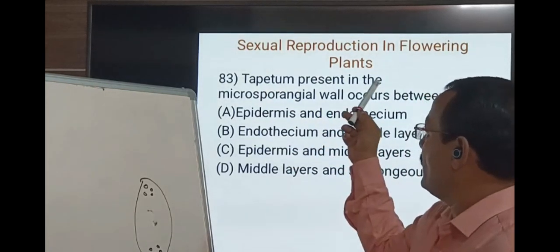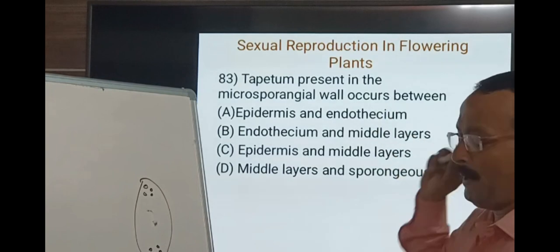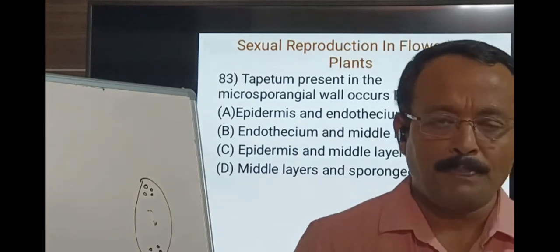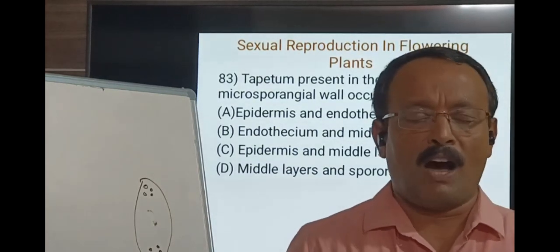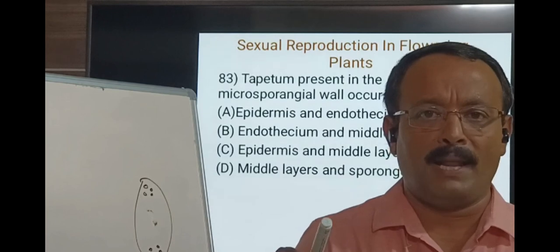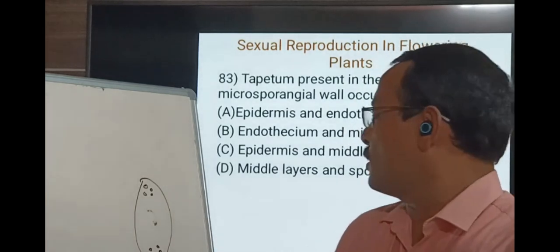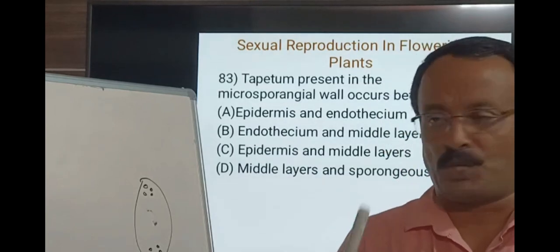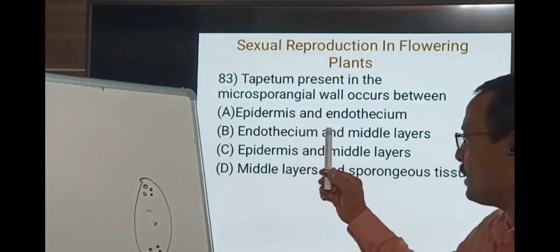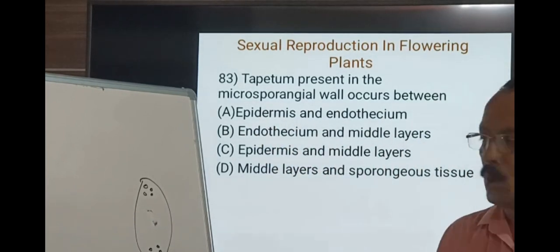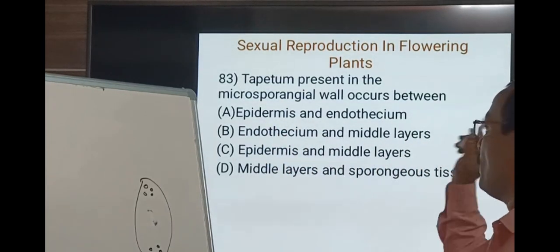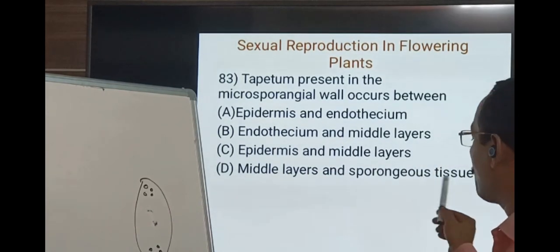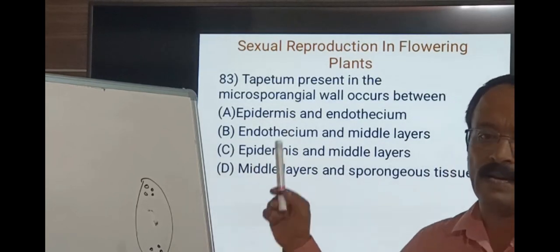The tapetum is present in the microsporangia wall. The layers from outermost are: epidermis, endothecium, one or two middle layers, and then tapetum. After tapetum is the sporogenous tissue filling the microsporangium. Checking the options, the tapetum lies between the middle layer and the sporogenous tissue. So D — middle layer and sporogenous tissue — is the correct answer.